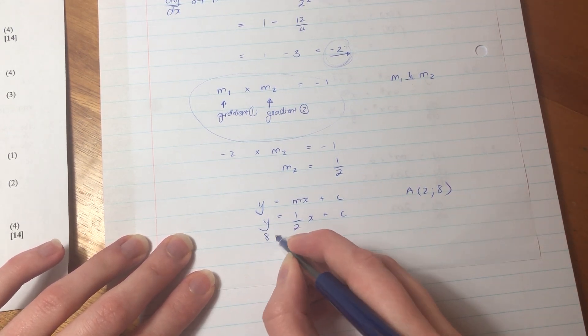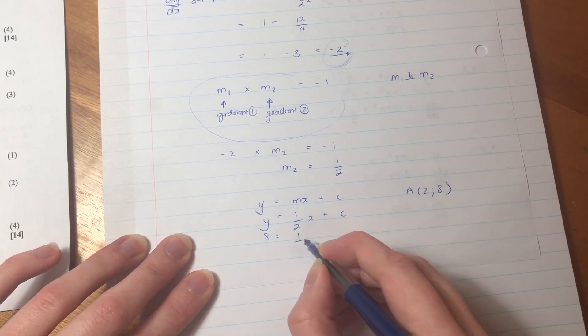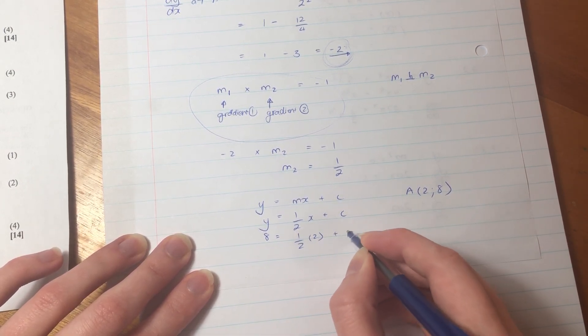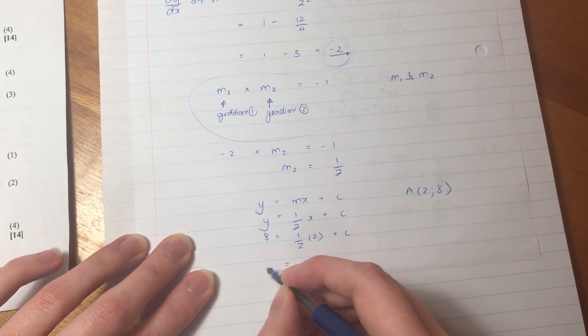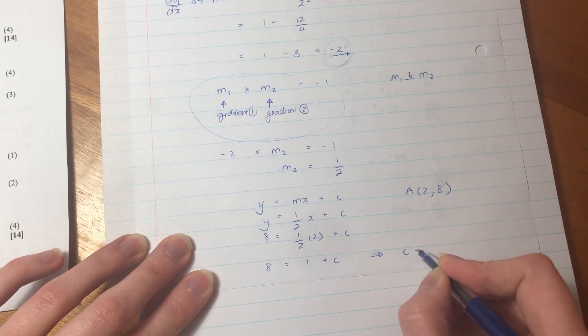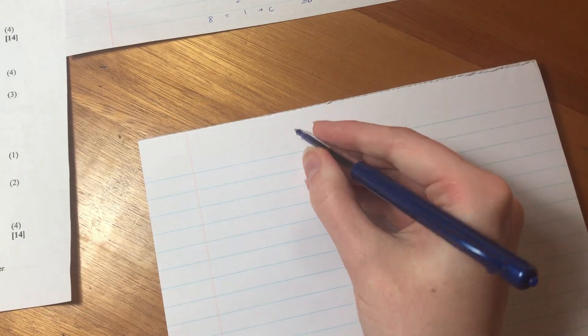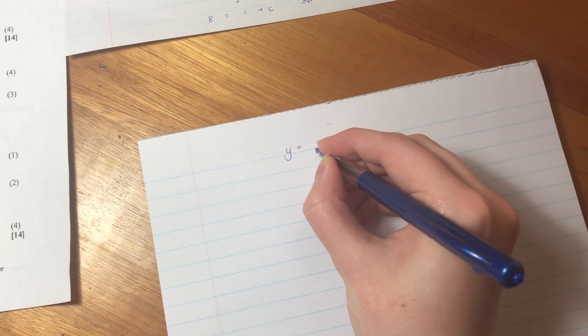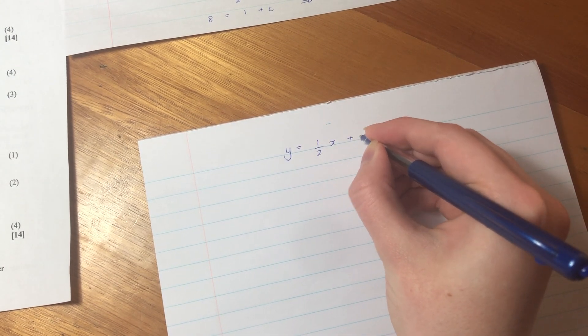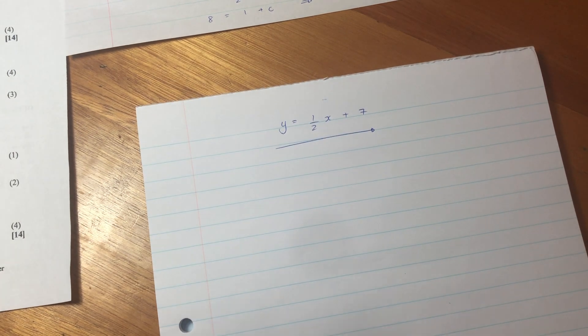We know that Y equals MX plus C. We know that our gradient is a half. But we know that it goes through the point A. So now all we need to do, sub in our points of A, get C, and then we're done. So we're going to say Y equals 8, then we put that in there, which gives us which means that C equals seven. So what is our final answer? It's Y equals half X plus seven. So now that is how you get it.